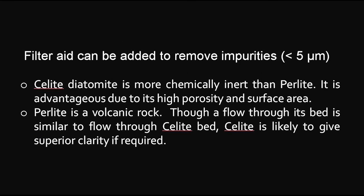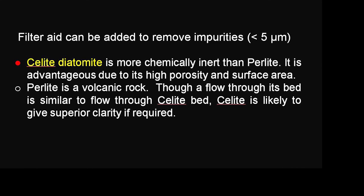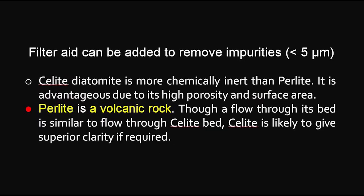Filter aid can be added to remove fine particles by vacuum filtration through a perlite or celite pad — a pre-coat made by building up a thin protective layer on the filter. Celite diatomite is more chemically inert than perlite and is advantageous due to its high porosity and surface area. Perlite is a relatively pure volcanic rock. Although flow through a perlite bed is similar to flow through a celite bed, celite is likely to be superior if maximum clarity is required.